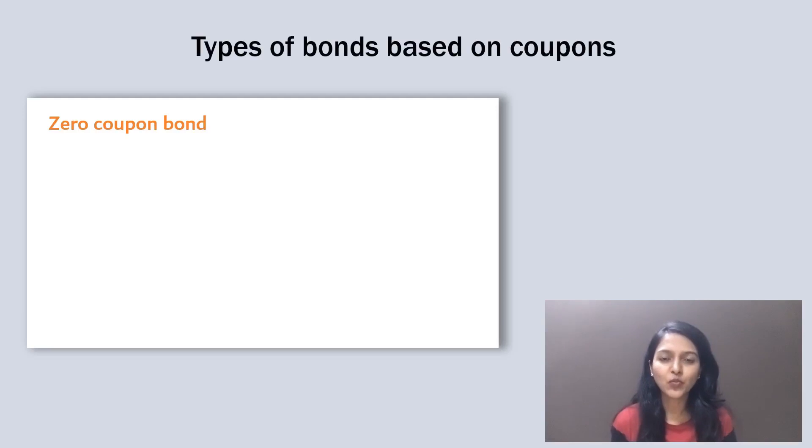Second type is zero coupon bonds. As the name suggests, these bonds don't pay any coupons; instead they just pay face value at the maturity.